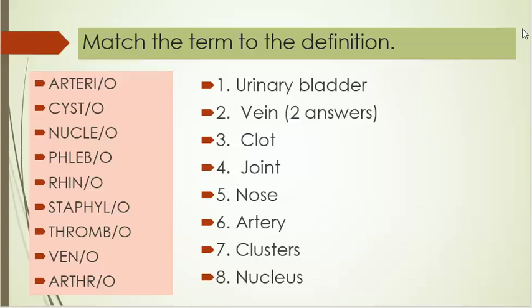Number one: urinary bladder. Number two: vein, and it has two answers. Number three: clot.